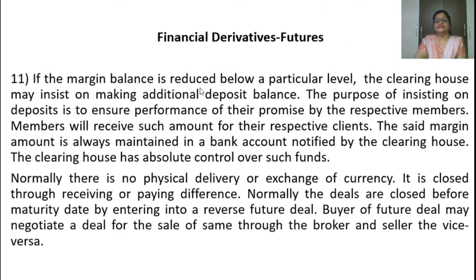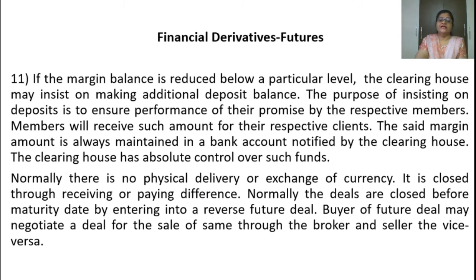If the margin balance is reduced below a particular level, the clearing house may insist on making an additional deposit balance. The purpose of insisting on deposits is to ensure performance of promise by the respective members. Members will receive such amount for their respective clients. The margin amount is always maintained in a bank account notified by the clearing house, which has absolute control over such funds. Normally, there is no physical delivery or exchange of currency — it is closed by receiving or paying the difference amount. Deals are normally closed before the maturity date by entering into a reverse future deal.